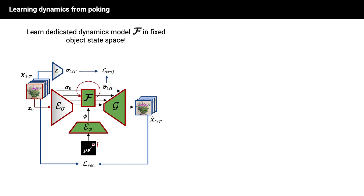As we learn our model in a fixed state space, we can add a trajectory loss between the predicted and ground truth trajectories of object states, to help the model predict plausible motion for the non-poked object parts.